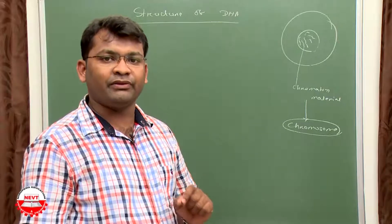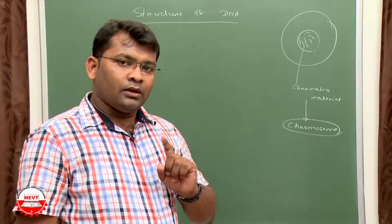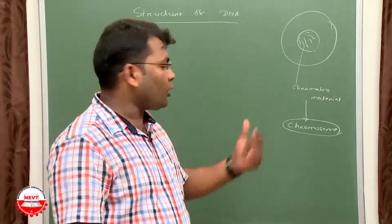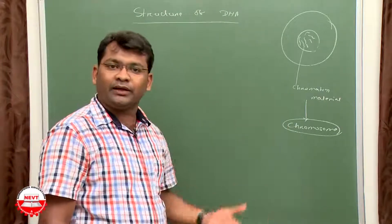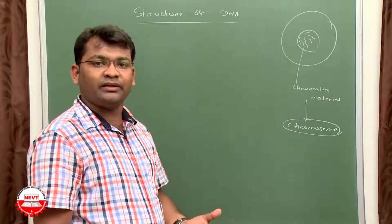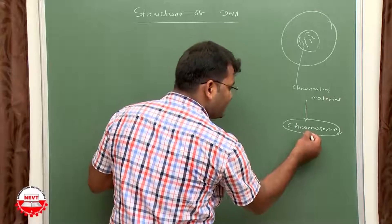Like human beings, it is 23 pairs or 46 numbers. From organism to organism, chromosome numbers vary. Similarly, the number of DNA contents or DNA molecules will vary, and genes will vary. Let's discuss what is gene and what is DNA.